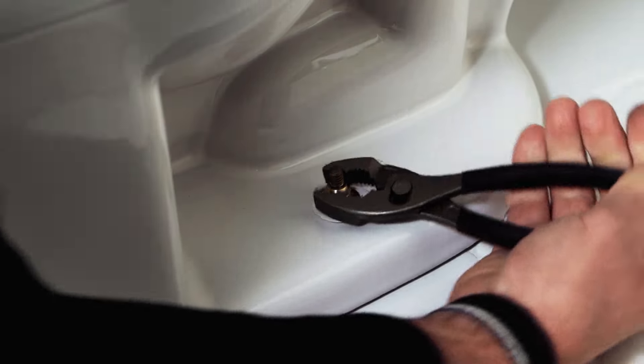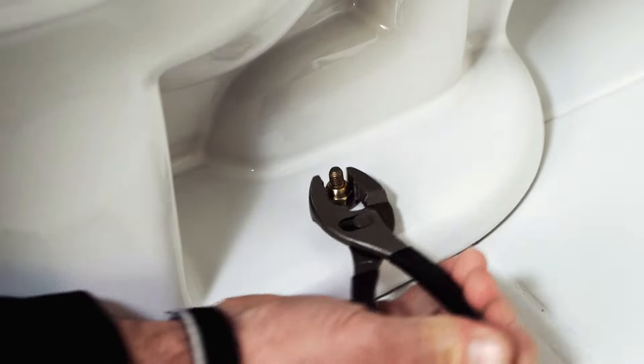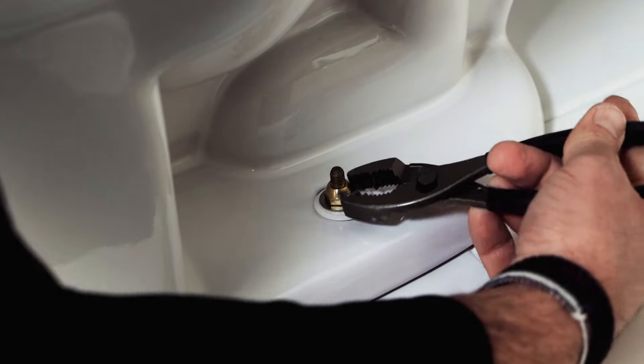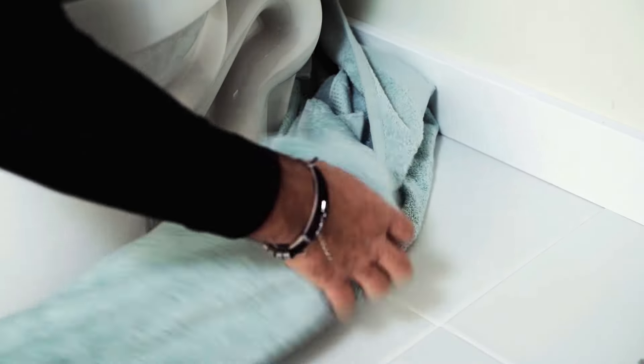Once you do that you're going to carefully lift the toilet straight up if you can, because if you jostle the toilet around you may be spilling water onto the floor. So it's a good idea to have a couple of towels handy to clean up any water.